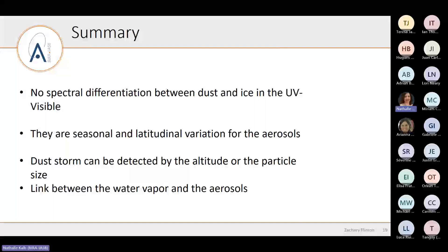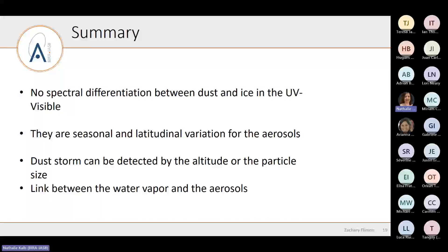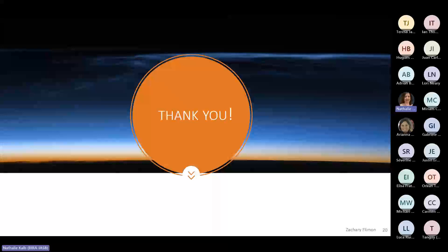To summarize: in the UV you cannot differentiate between dust and ice from spectra alone, but you can use other methods by comparing with other instruments and parameters. We saw a lot of seasonal and latitude variation for aerosols. During storms, aerosols can be detected either by the fact that they are brought to very high altitude or by the appearance of much larger particles. Finally, we found a link between water vapor and aerosols. Thank you.